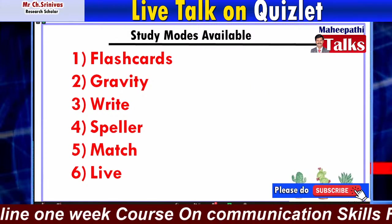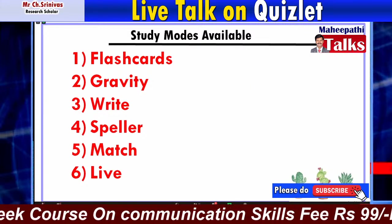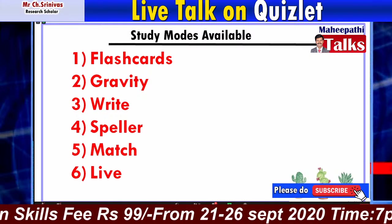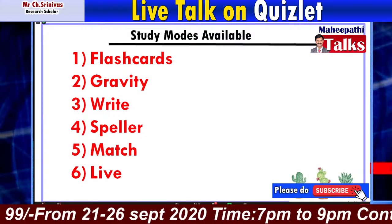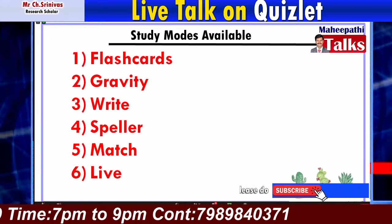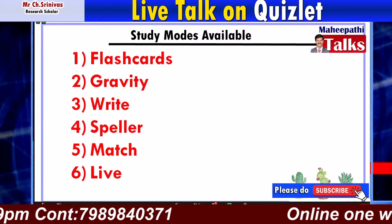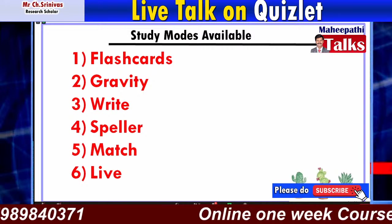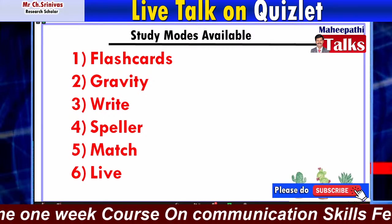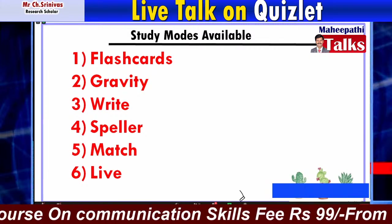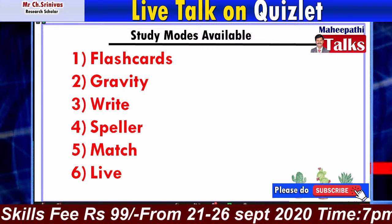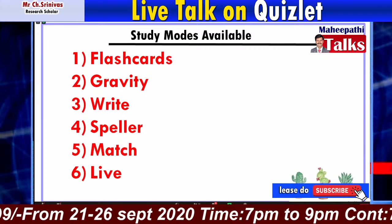There are six study modes available. The first is flashcards, which are highly helpful in preparing vocabulary. If you want to introduce vocabulary to students and make them learn it instantly, flashcards are designed by teachers. The second mode is the gravity game, a kind of game where students play with the vocabulary. For example, if I introduce 10 words in flashcards, students will play a game based on those 10 words using the gravity facility.